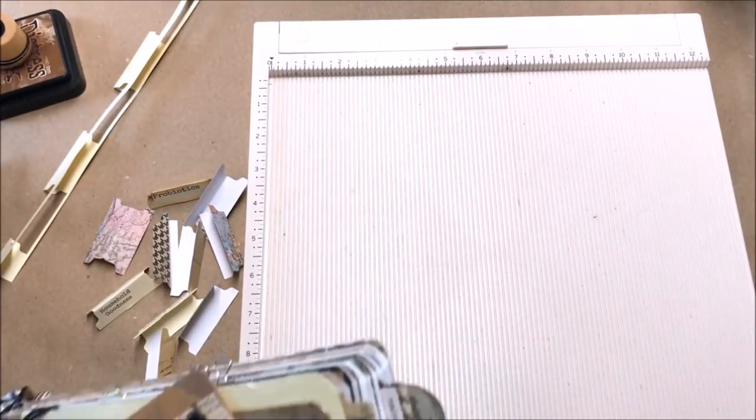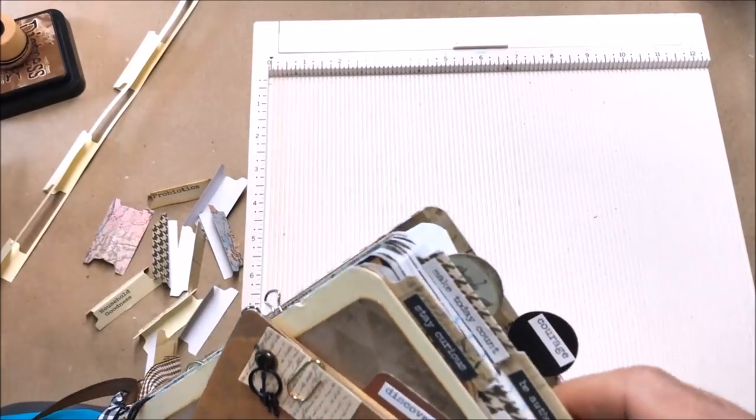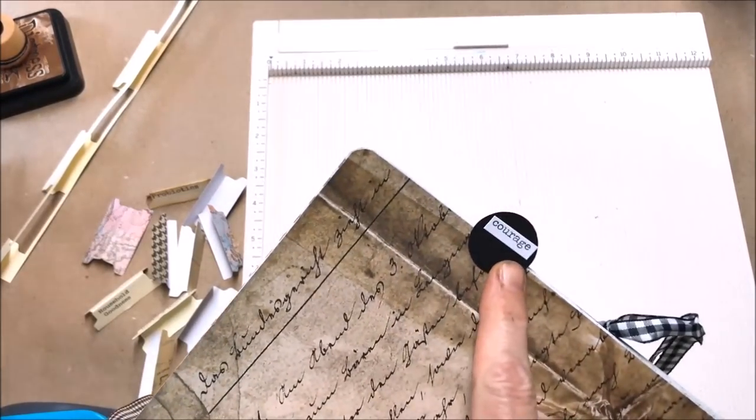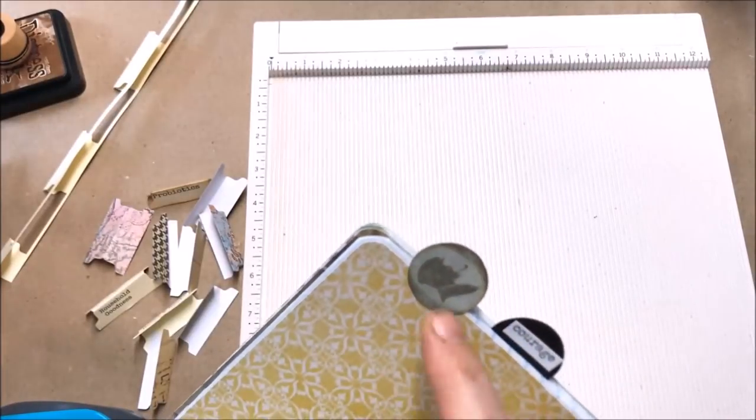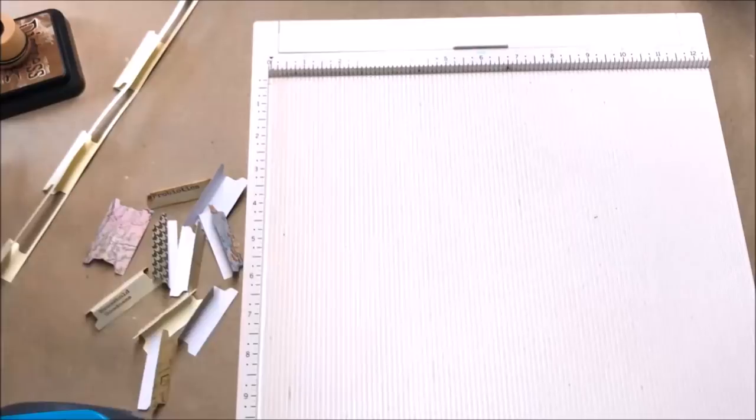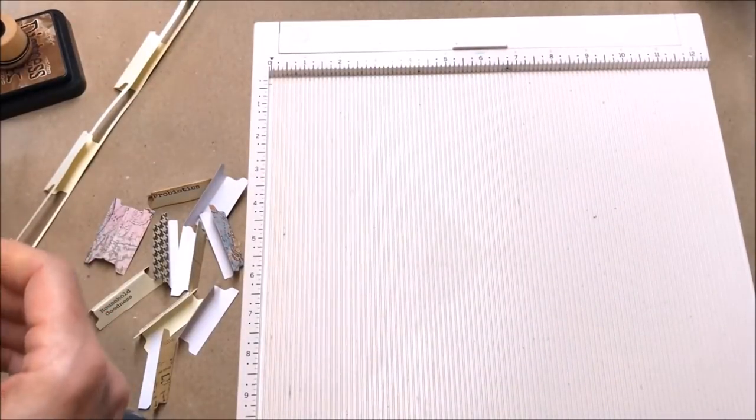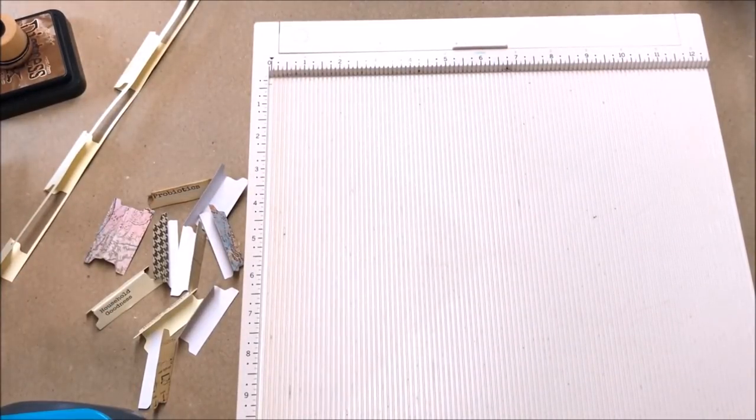You can also use a round punch and either put a word on it or find a certain illustration that you like to put on it. For this healing journal for my daughter that I'm making, one of the sections is going to have information on bees.